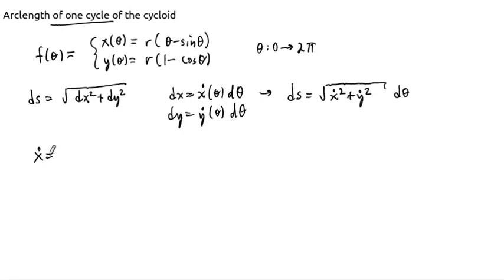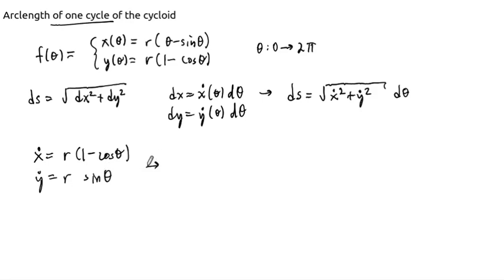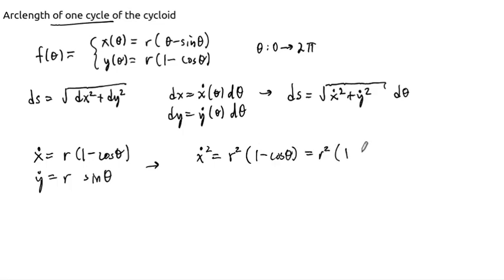First of all, x-dot equals r times one minus cosine of theta, and y-dot equals r sine of theta. We need to square these, then add them up, and take the square root. So x-dot squared is r squared times one minus cosine of theta, all squared, which expands to r squared times one minus two cosine of theta plus cosine squared theta.